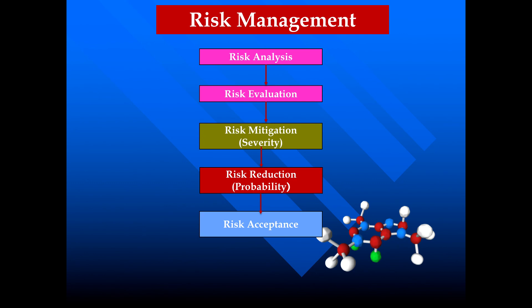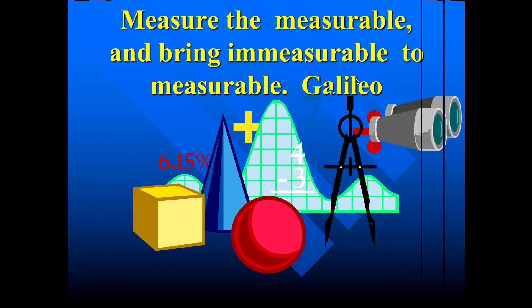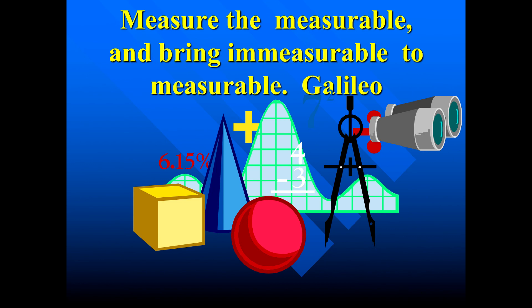Risk management consists of several steps: first, we detect and analyze the risk, then we evaluate the risk, then we think about how to mitigate the risk, and finally we reduce the risk. This is how risk management works. In closing, I would like to quote Galileo, who says: measure the measurable, and bring the unmeasurable to measurable. Thank you.